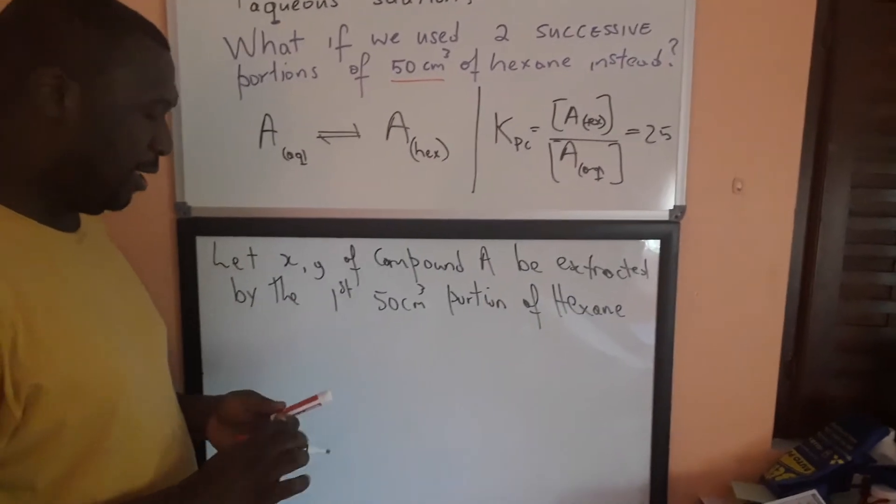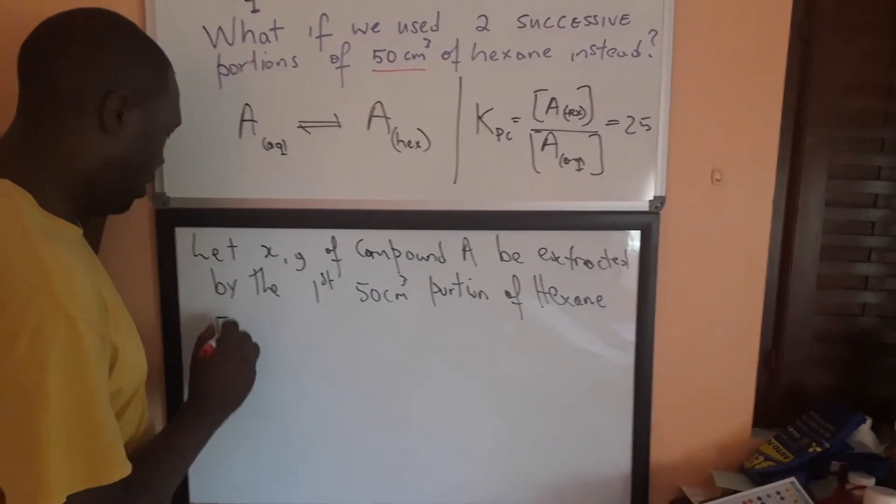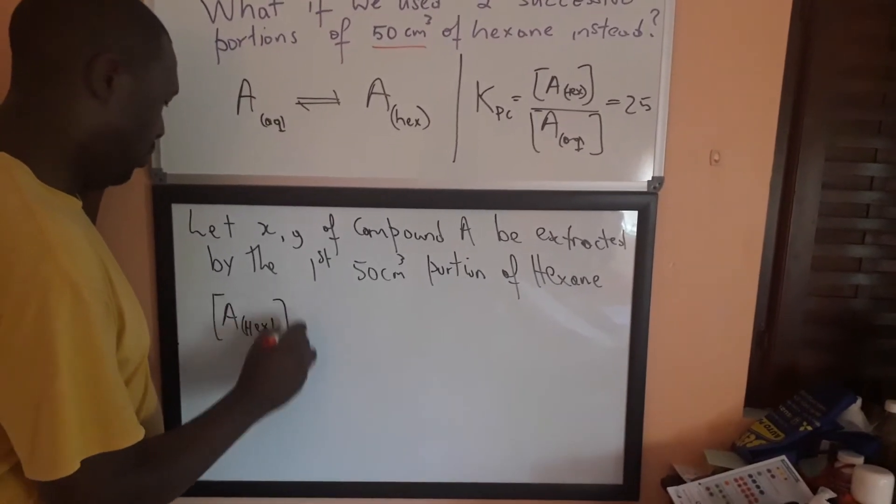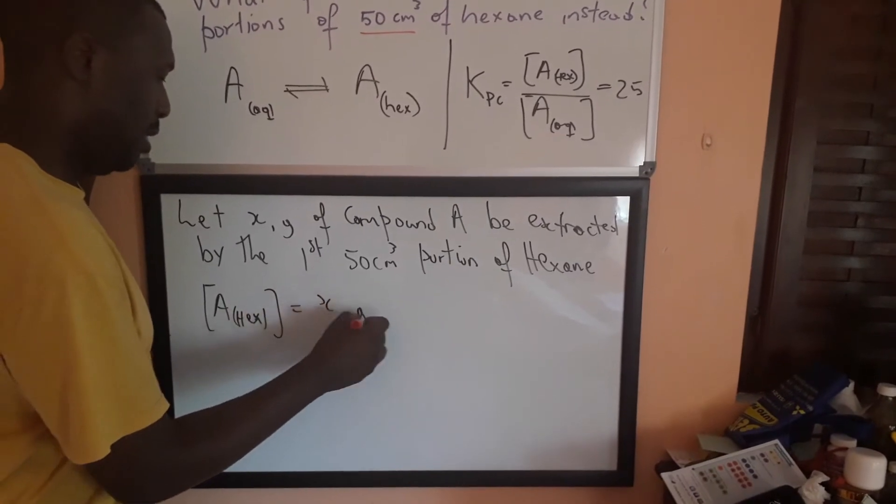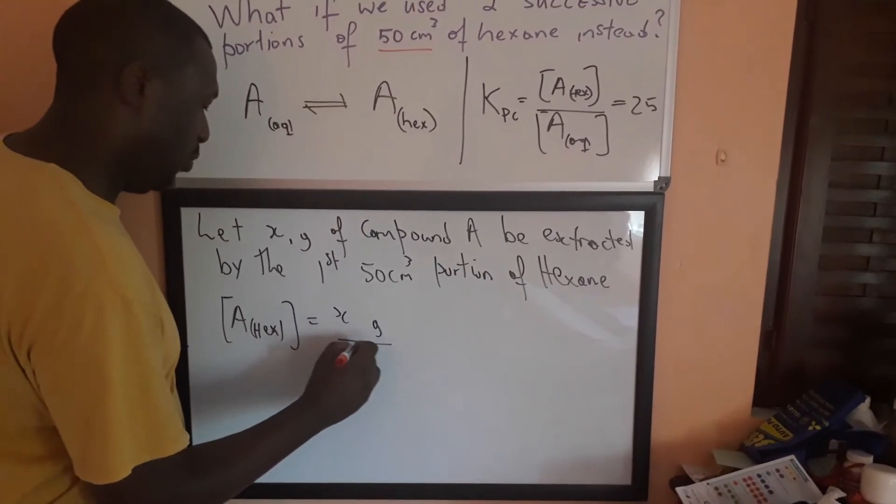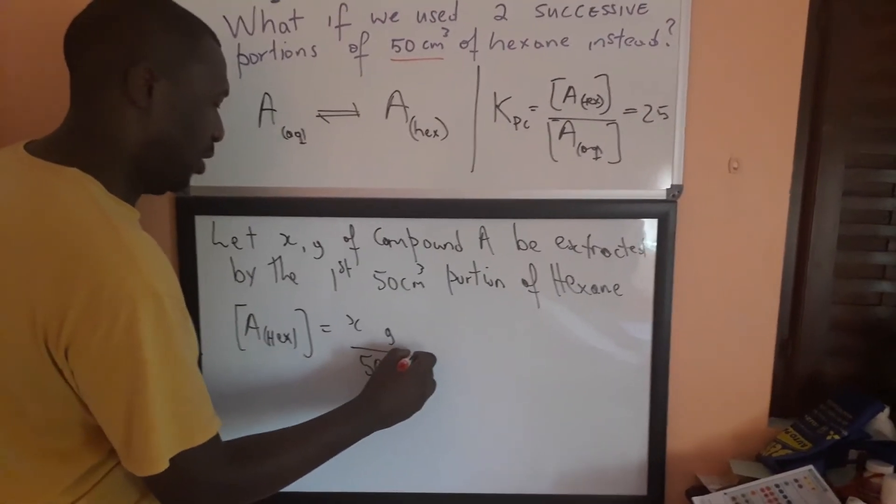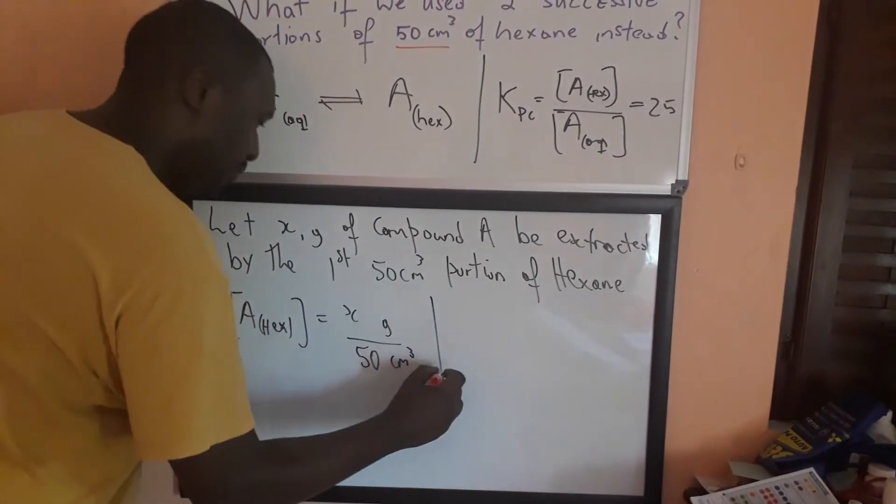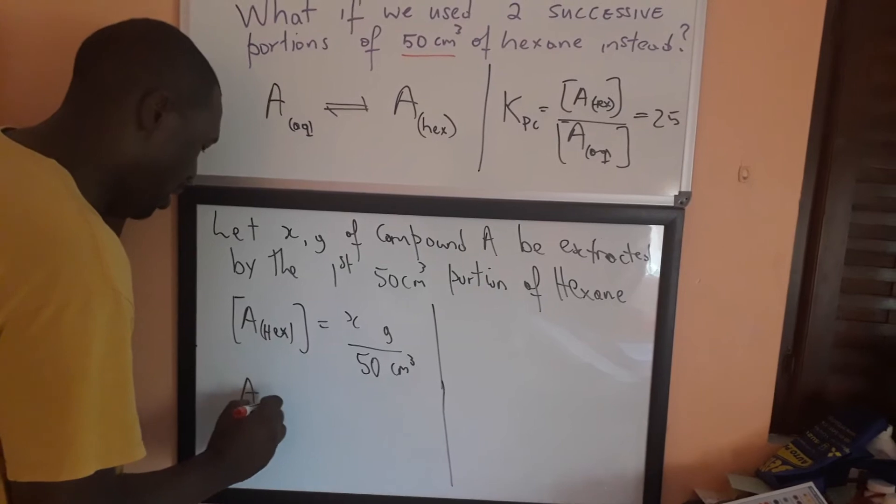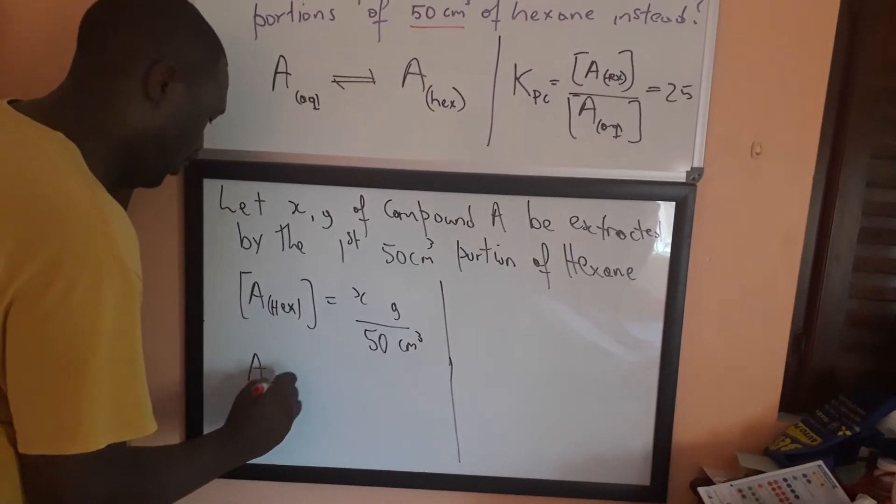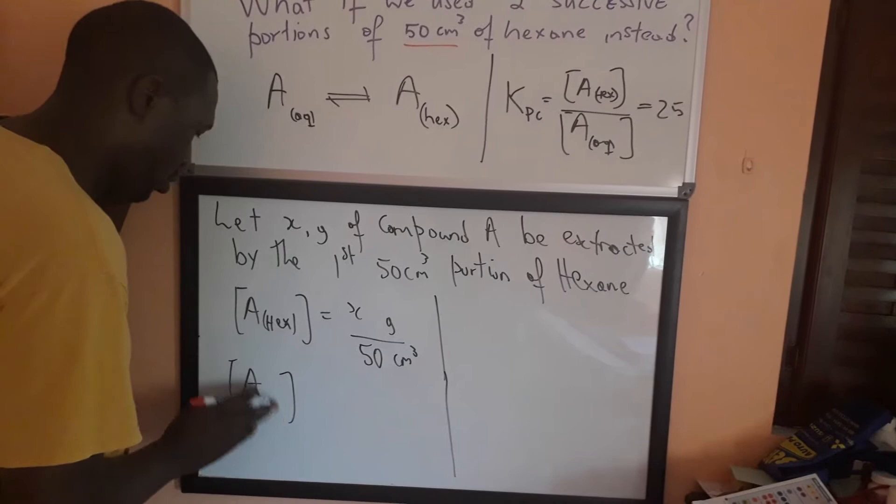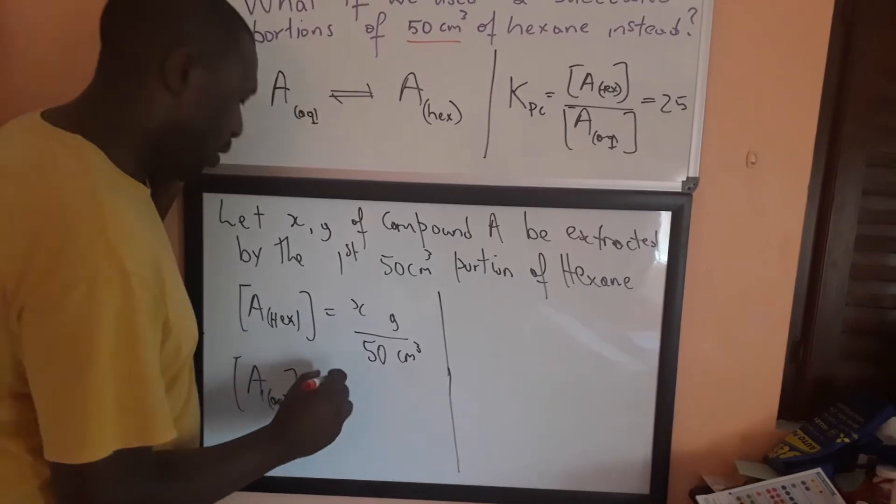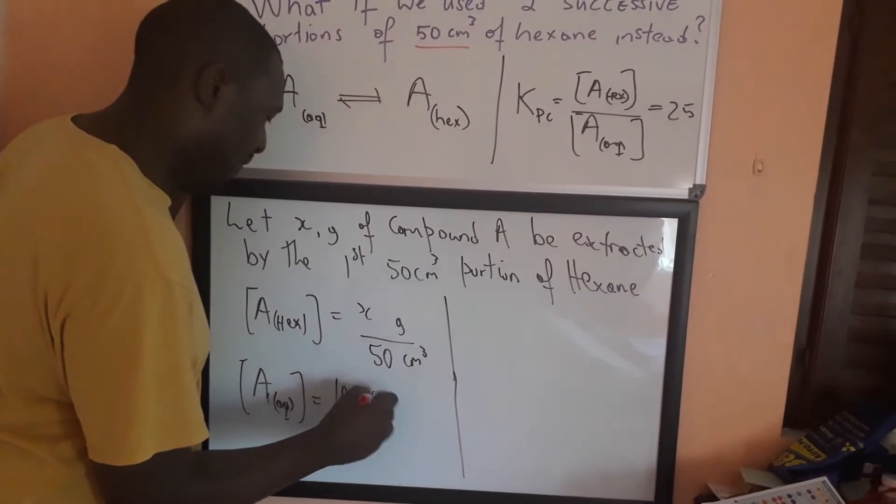Now, if X grams is extracted, then the concentration of A in hex would be the mass extracted, X gram, over the volume, which is 50 cm³.